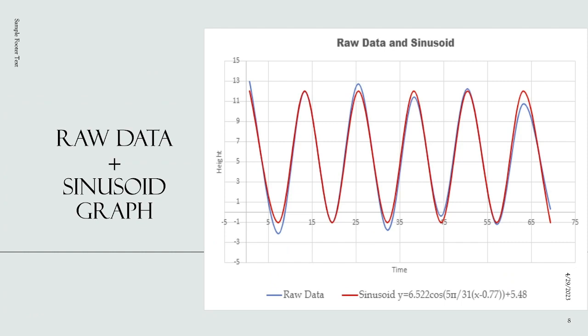Here is our raw data plus our sinusoid graph. The raw data is in blue and the sinusoid data is in red. The sinusoid data follows the equation, acting as a line of best fit for the raw data. The raw data doesn't have the exact same maximums and minimums — they vary because it's raw data rather than the equation.